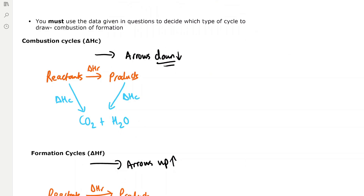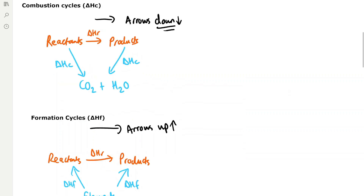When you're drawing Hess cycles you must use the data given in the questions to help you decide which type of cycle to draw. There are two types: combustion or formation. Combustion cycles look like this with the arrows facing downwards and carbon dioxide and H₂O at the bottom of the cycle.